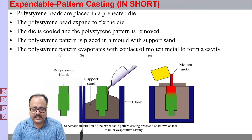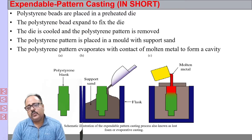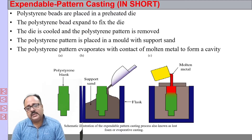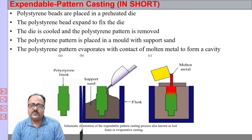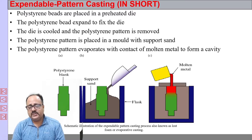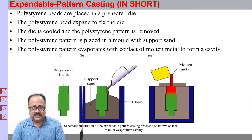We place it in the flask and back it up with molding sand, which is basically dry silica sand, and then pour the molten metal. When the molten metal comes in contact with the EPS — expandable polystyrene — the polystyrene will evaporate, leaving a very small amount of residue inside the mold. The metal will replace the polystyrene, and when it solidifies, we break the mold and take out the casting. This is the basic process — very simple.